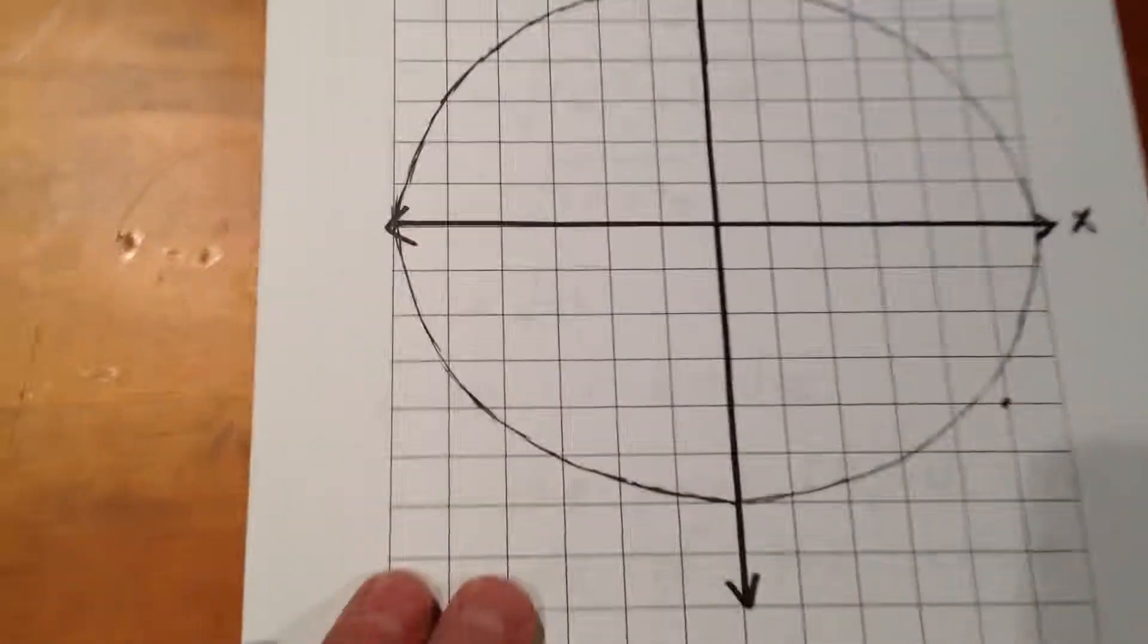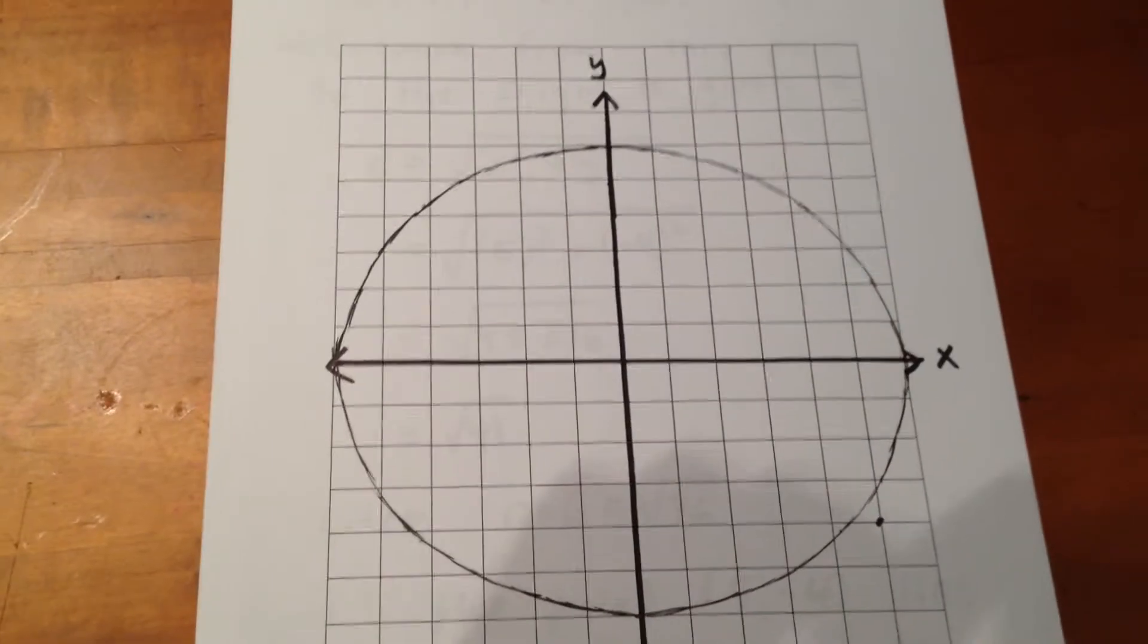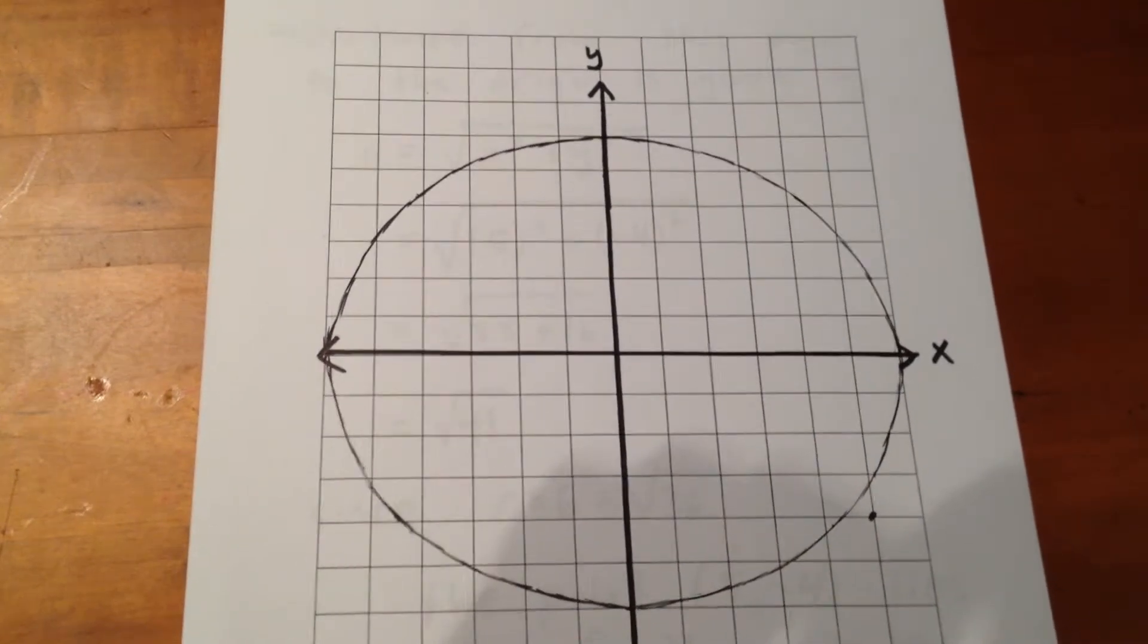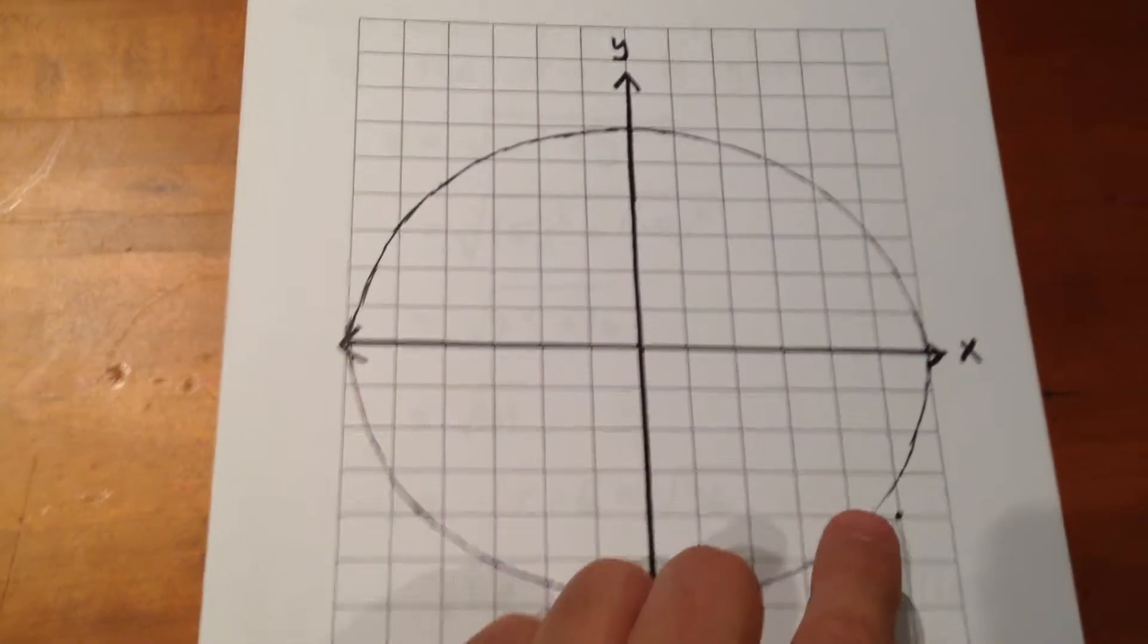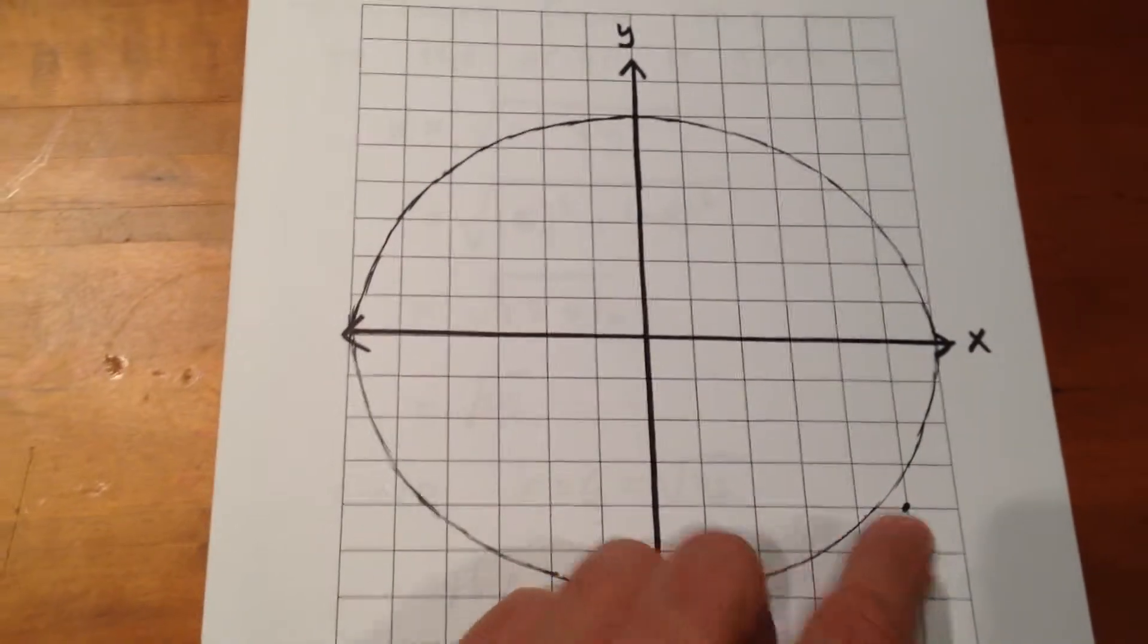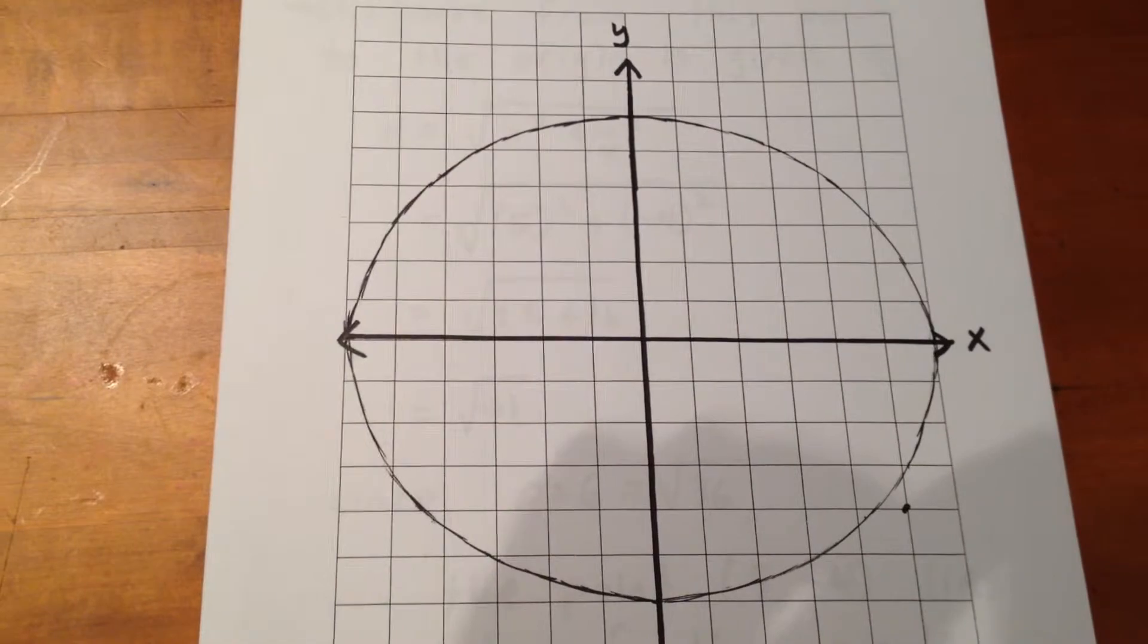Looking at it graphically, what we have is a circle that looks like that. The radius is 6. Now the point 5, negative 4, lies right here. So clearly from a graphic perspective, we can tell it's outside the circle.